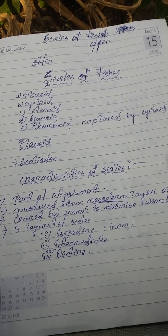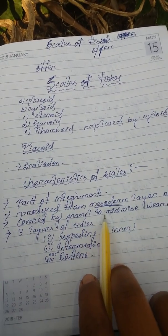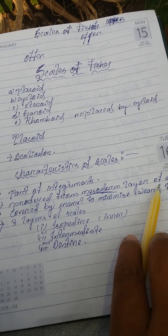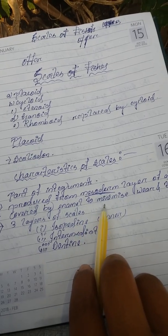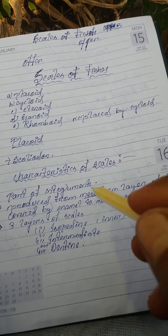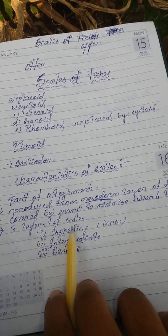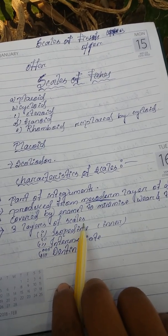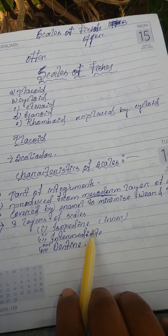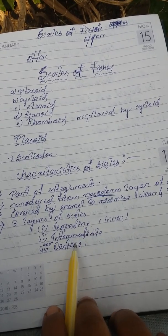Scales of fishes are parts of integuments produced from the mesoderm layer of dermis. These are covered by enamel to minimize wear and tear. Mainly, scales have three layers: isopedine, which is the innermost layer; an intermediate layer; and the outer layer, which is dentine.